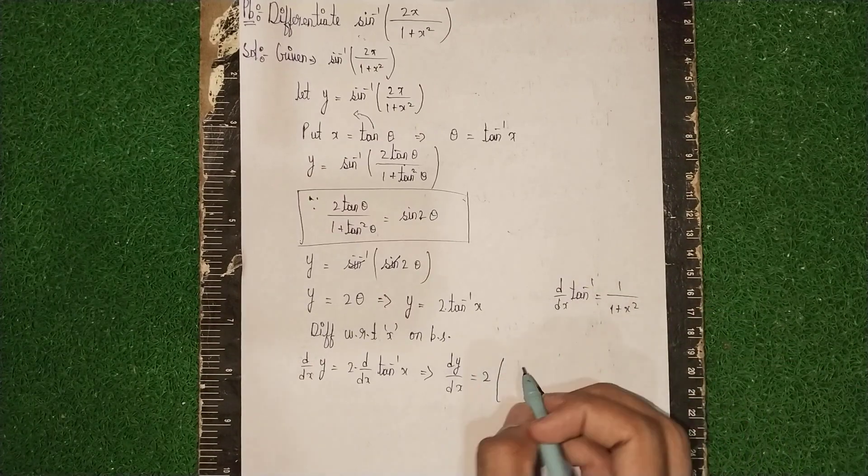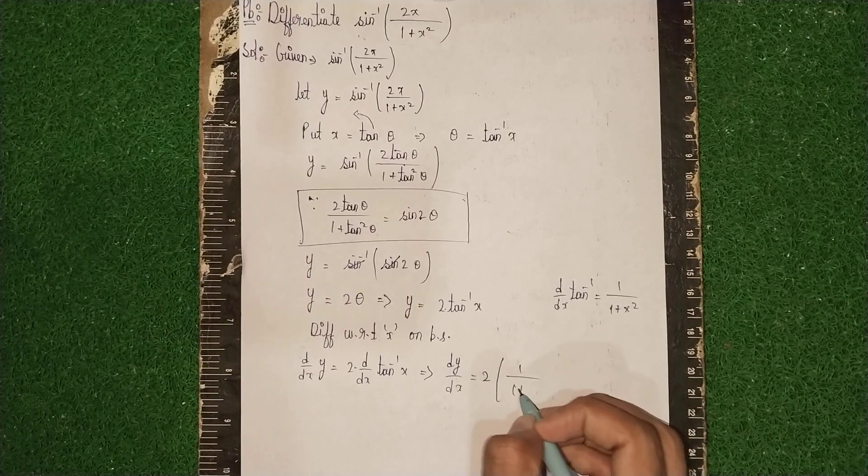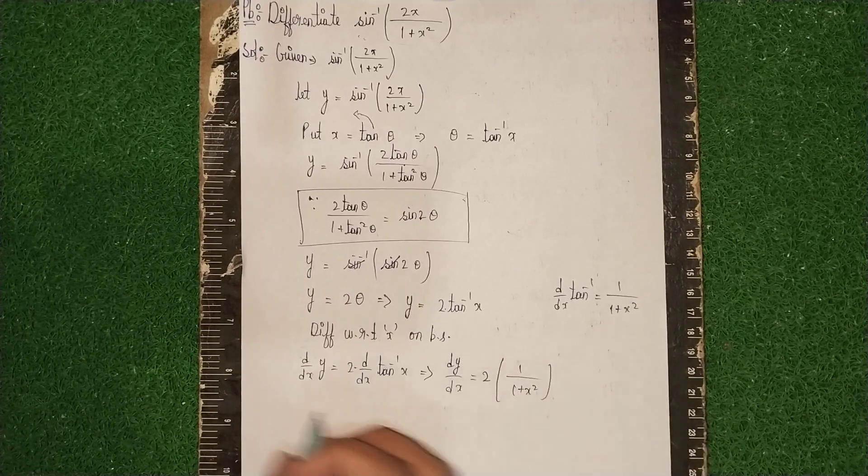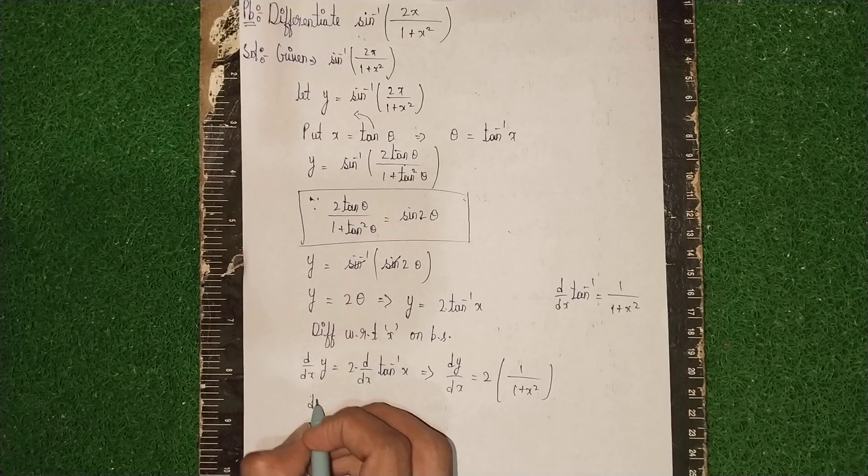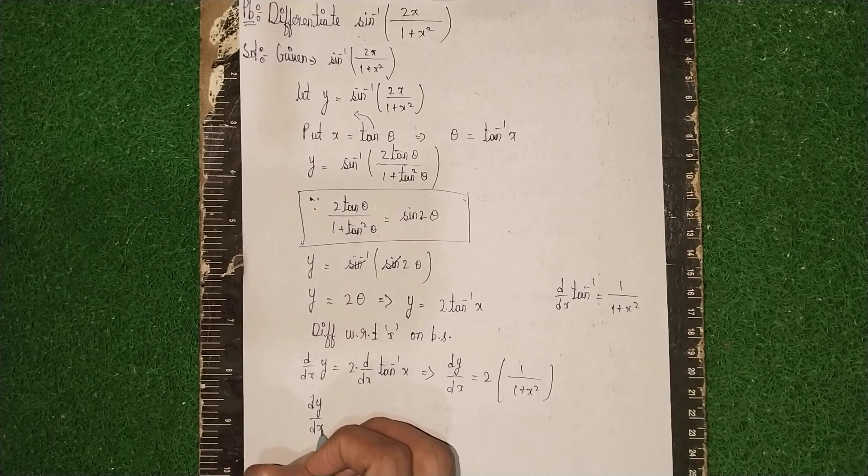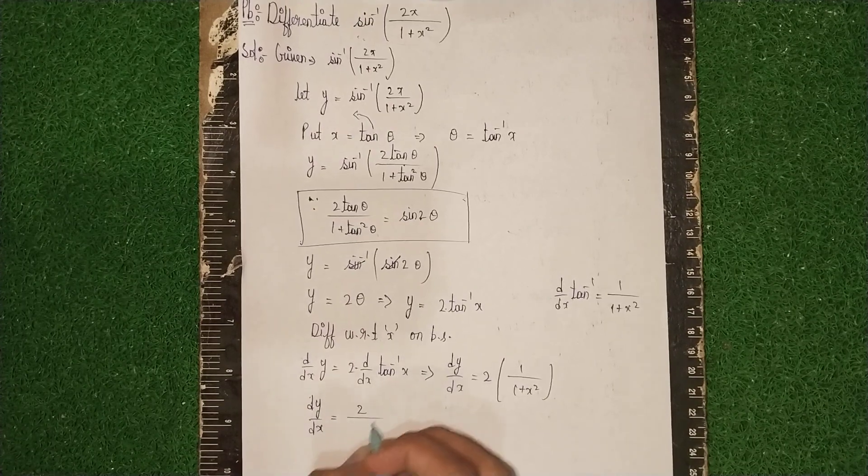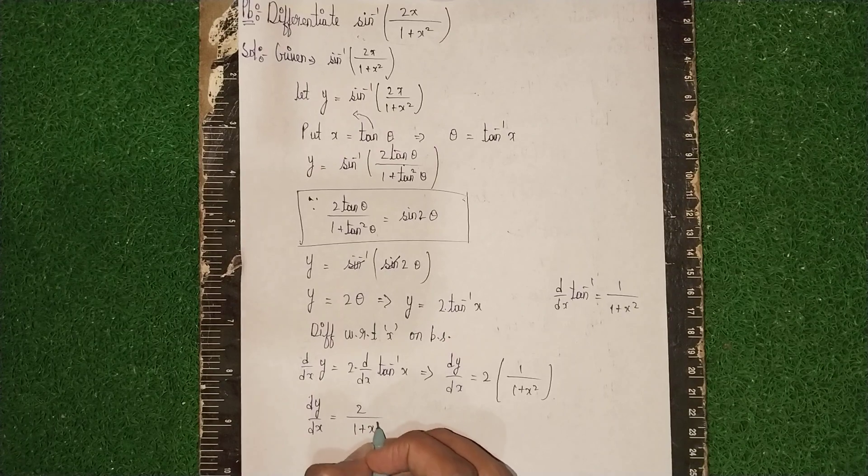So we get 1/(1+x²). At last, our answer is dy/dx = 2/(1+x²).